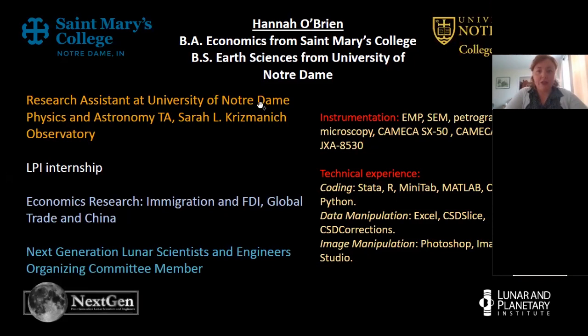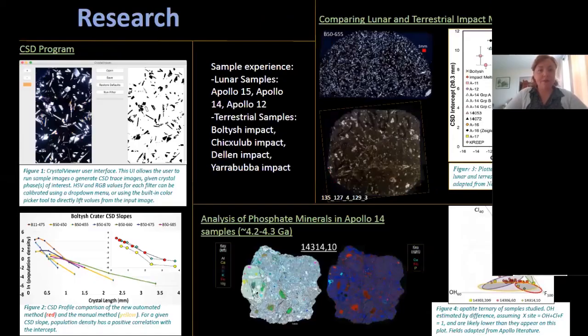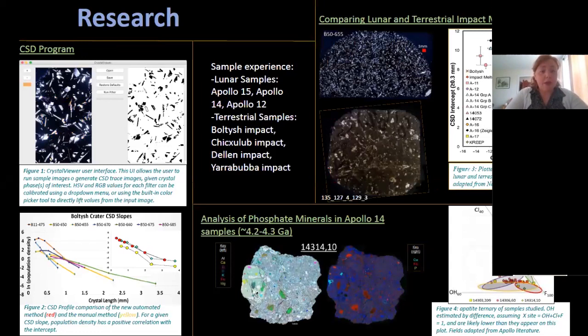I also have a decent amount of technical experience — I can code, particularly in statistical and image analysis programs, and I have experience with image manipulation using Photoshop and ImageJ. Right now at Notre Dame, I'm actually working on a CSD program. As Sam mentioned earlier, CSDs are extremely laborious and take a long time. We aim to automate part of this process by creating crystal traces using this unique program. Figure 1 shows the GUI — the guided interface — for the program. This allows users to run a cross-polarized sample image to generate a CSD trace given crystal phases of interest, using a hue saturation value, RGB filter, and blur filter.